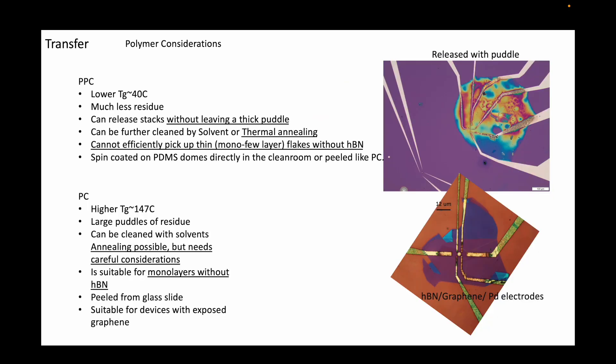PC, on the other hand, has a higher glass transition temperature of around 147 degrees Celsius. Because it is stickier than PPC, it can pick up really thin flakes, even monolayers. But as a result of the stickiness, it tends to leave large puddles of PC residues.